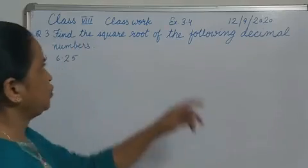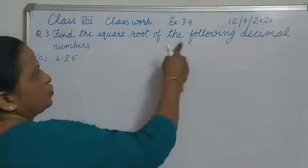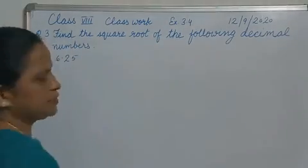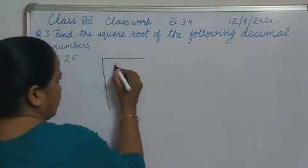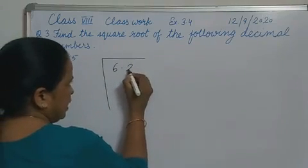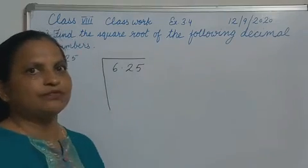Let's continue exercise 3.4, question number 3: find the square root of the following decimal numbers. Part A: 6.25. We will start the same way as we start the square root of any number.